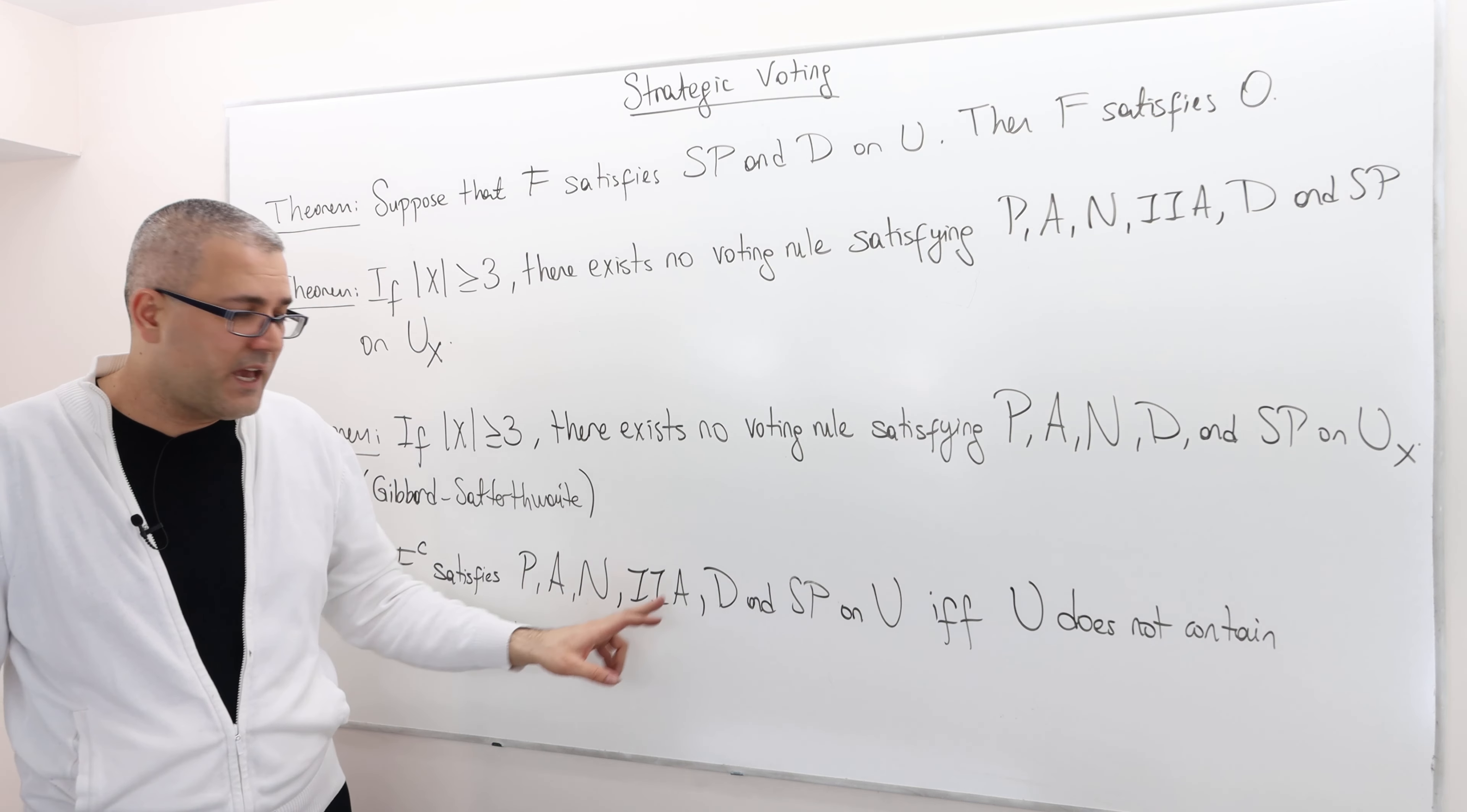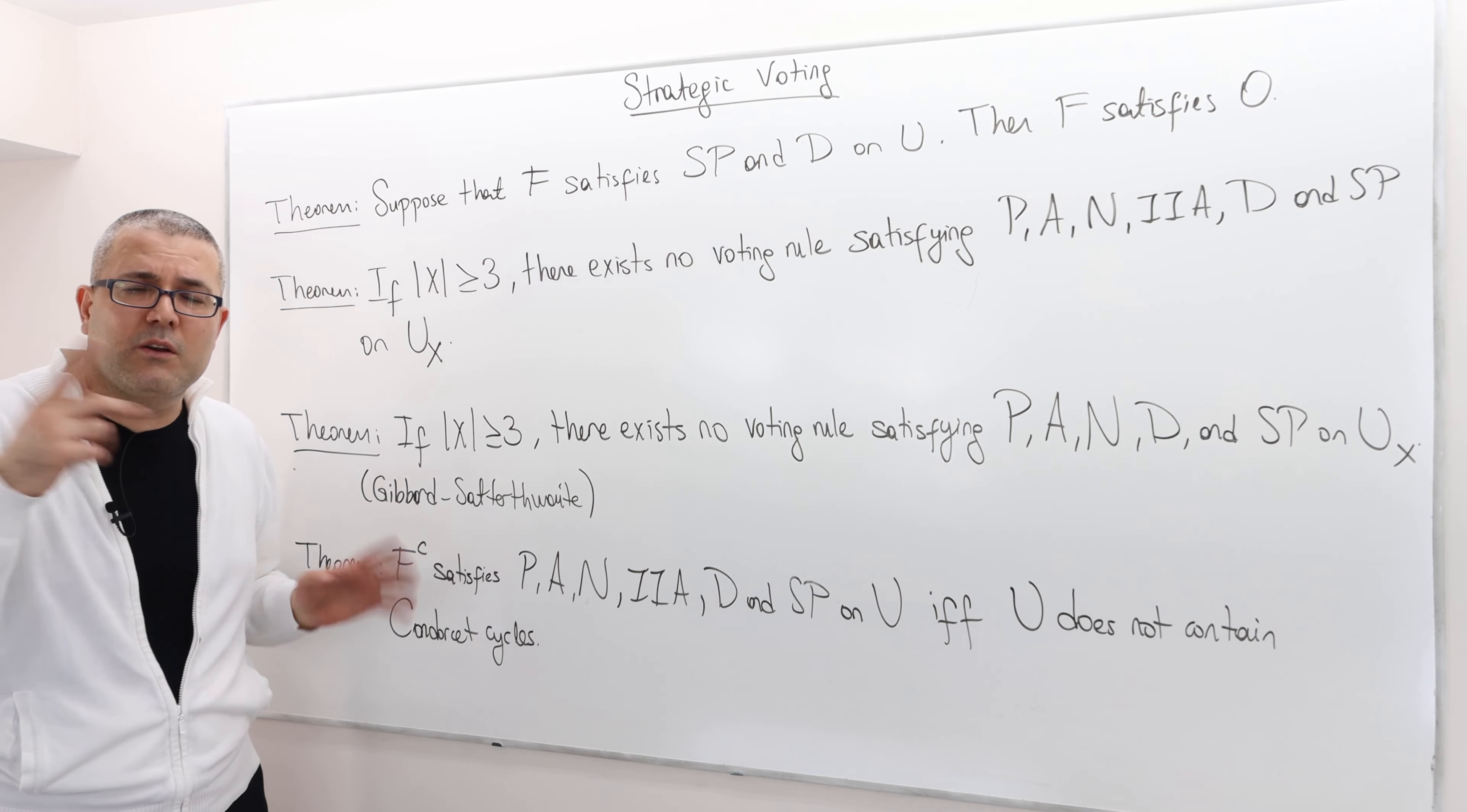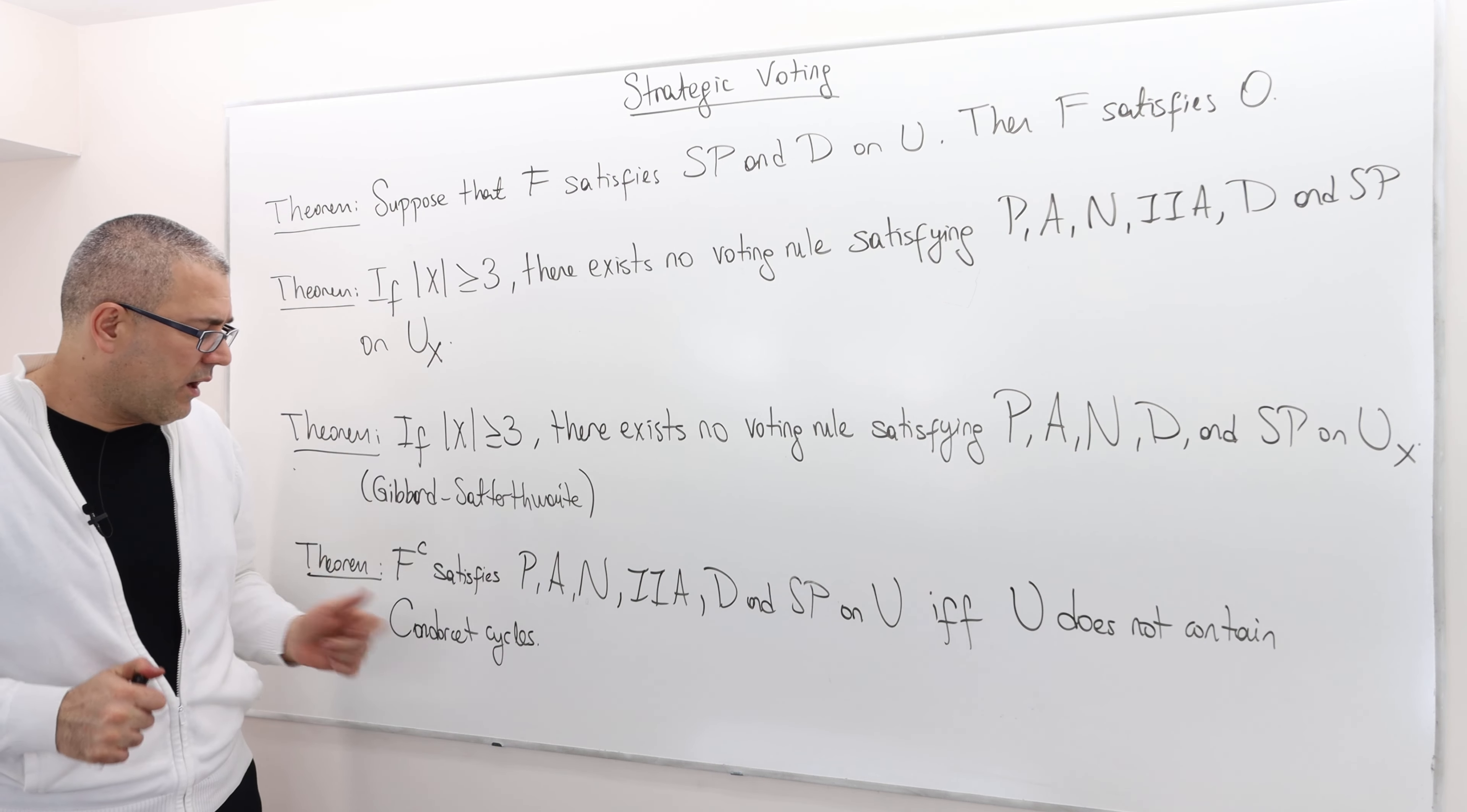decisiveness and strategy proofness on some restricted domain U, if and only if this domain does not contain Condorcet cycles. Remember the Condorcet cycles? We talked about, you know, I think two previous lecture videos. And so if your domain of preferences doesn't contain Condorcet cycles, well then you know what?